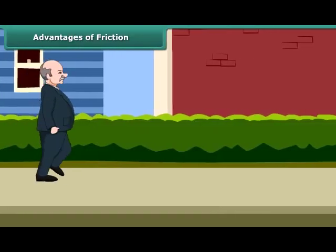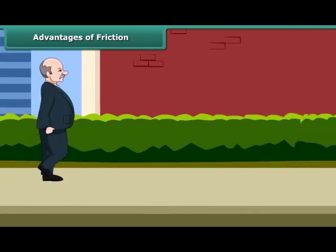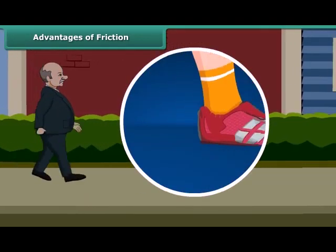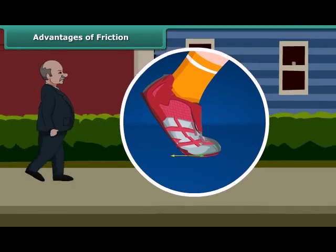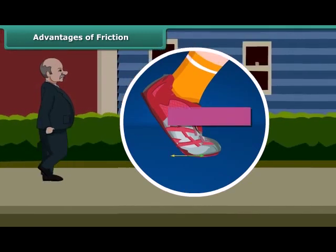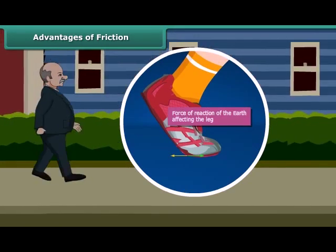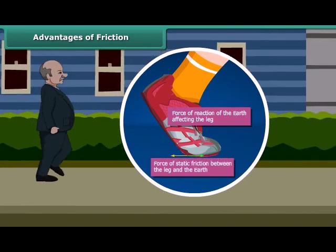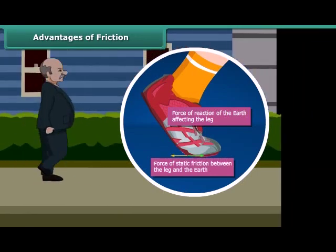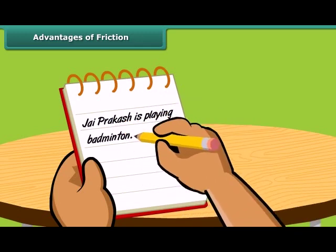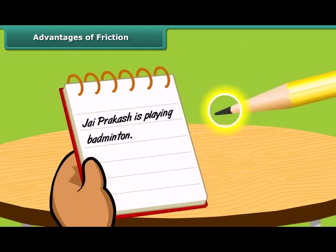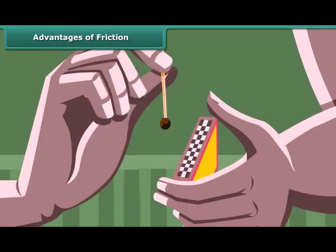Friction is both good and bad. We are able to walk because friction prevents us from slipping. When we push the ground with our foot, friction provides a forward reaction and pushes us forward. We are able to write because there is friction between the tip of the pencil and the paper. Lighting a matchstick is another useful application of friction.